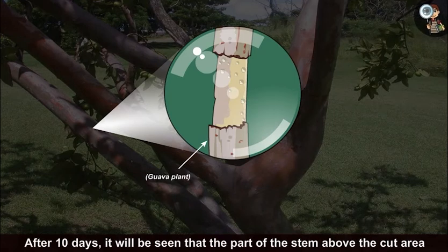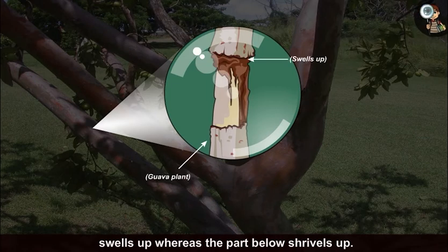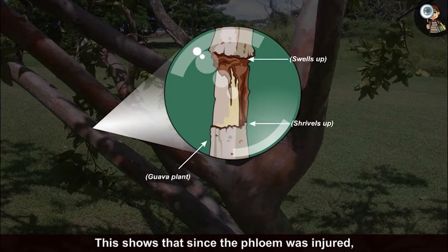After 10 days, it will be seen that the part of the stem above the cut area swells up whereas the part below shrivels up. This shows that since the phloem was injured, the food conduction in the downward direction could not take place.